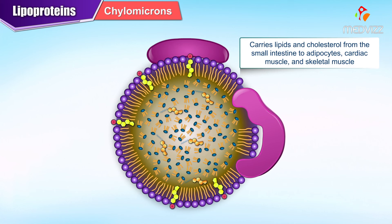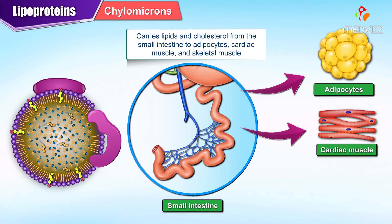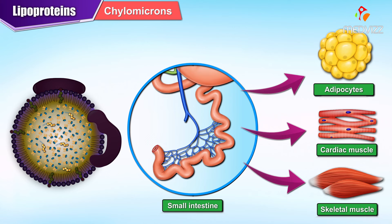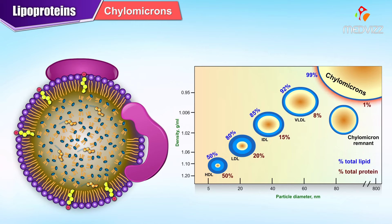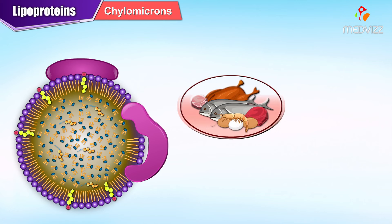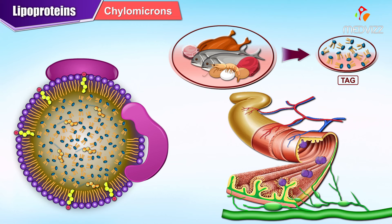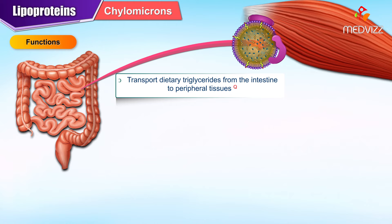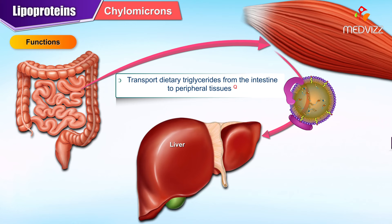Chylomicrons are lipoproteins that carry lipids and cholesterol from the small intestine to adipocytes, cardiac muscle and skeletal muscle. They are composed of an outer phospholipid with embedded apolipoproteins and a core containing lipids and cholesterol. Chylomicrons are very large particles mainly composed of triglycerides more than cholesterol, contain diet-derived triacylglycerol, and are secreted by the intestinal epithelial cells into lymphatic. Their function is transport of dietary triglycerides from the intestine to the peripheral tissues.